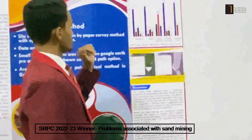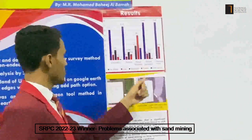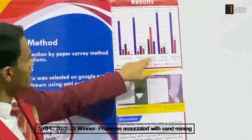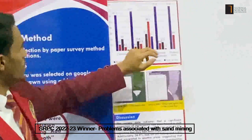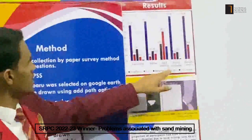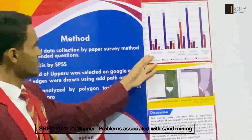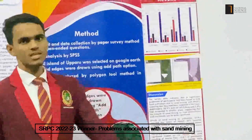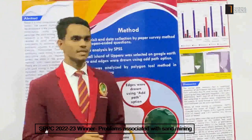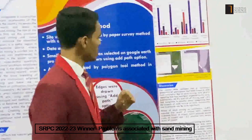These are the results from the paper survey method. We can see that stop breeding of marine lives in Upari Delta Region is severely affected by sand mining. And cultivation, habitat, animal husbandry, and drinking water are not much affected by sand mining. And this is the results from Google Earth Pro.